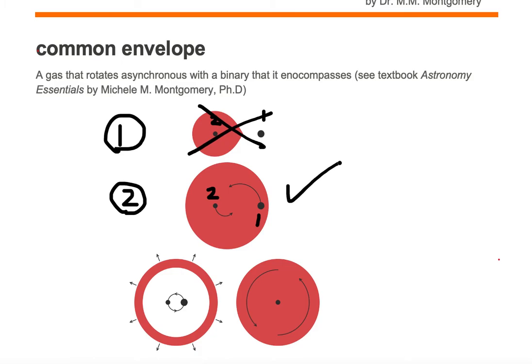This would be an example of a common envelope. Here we have a gas that's rotating asynchronously with the binary that it encompasses.